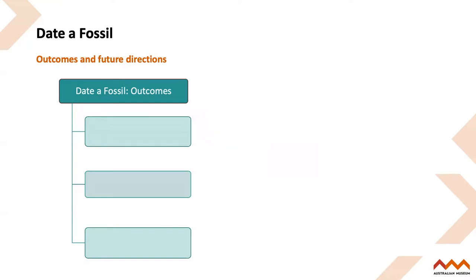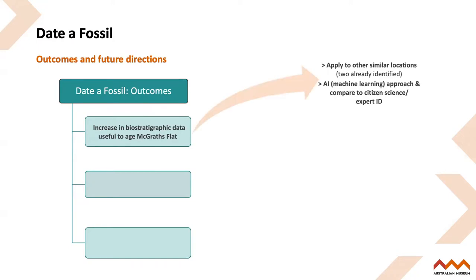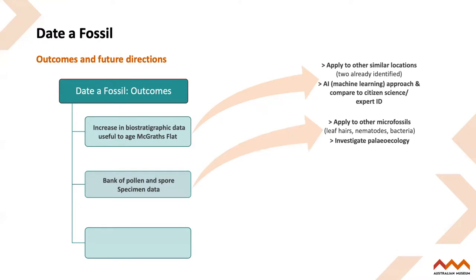Lastly, I'll go over some of the outcomes and future directions of the project. Outcomes include an increased data set of biostratigraphic data used to age McGrath's Flat, which can be applied to similar locations. Next steps might also include the use of AI or machine learning to identify the fossils and compare that to the efficacy of citizen science identification and even expert ID. We are deriving a bank of pollen and spore specimen data, and we can apply this type of approach to other microfossils.